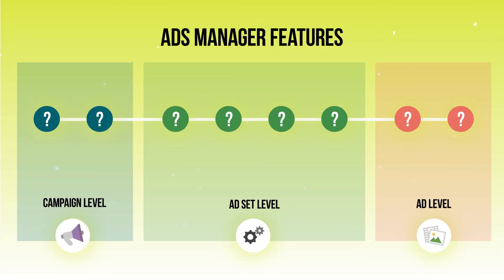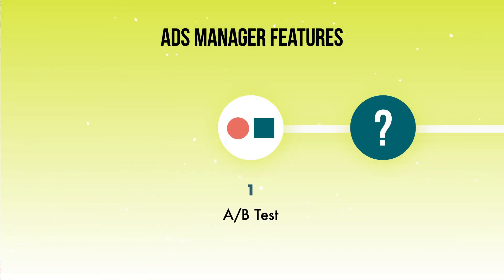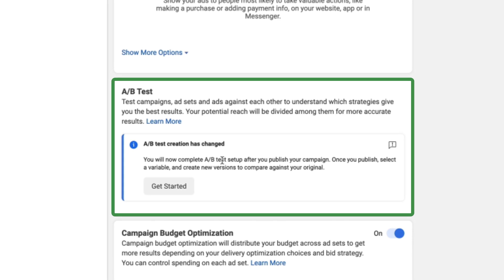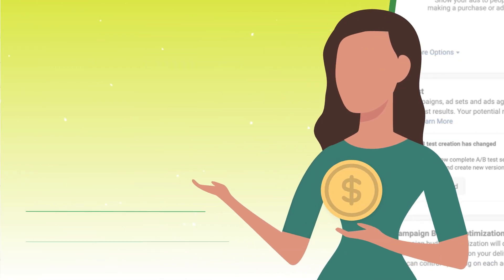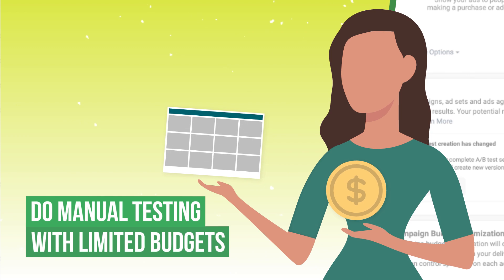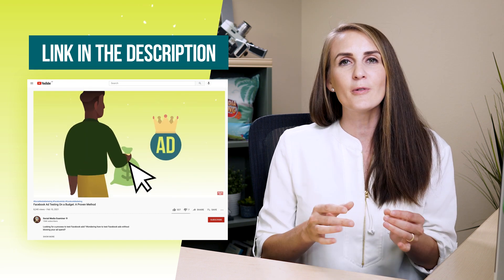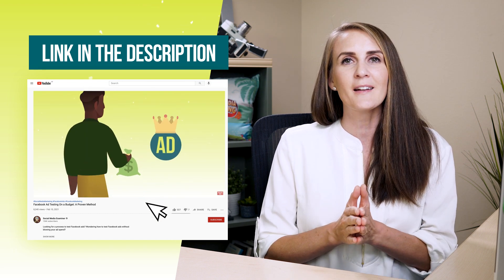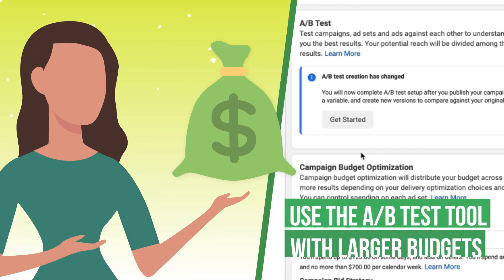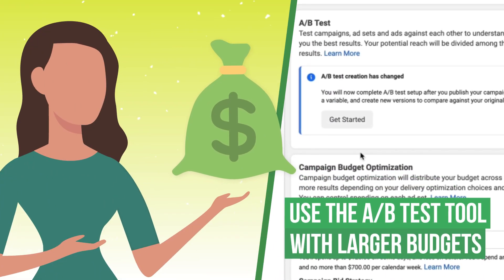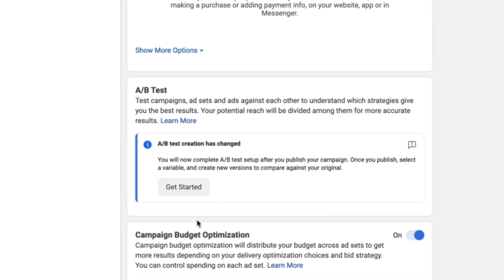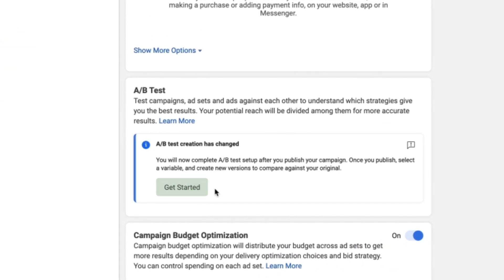The first feature we get asked a lot about is the A/B test feature. If you have a limited budget or a shorter time frame, I typically do my own manual testing process — click over to that link to learn how. If you have a bigger budget, the A/B test feature is great, and you can get started by clicking the 'Get Started' button.